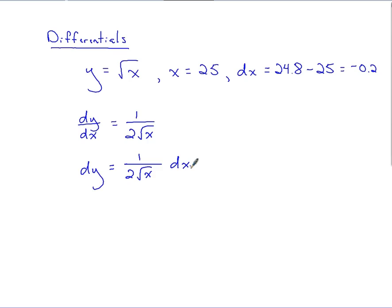Now, as we've done before, evaluate dy. Evaluate dy for the given values of x and dx. So the values of x and dx we came up with. We want over 2 times, x is 25, so the square root of 25. dx we found to be negative 0.2. Let's calculate that out. One-tenth of negative 0.2. Should get negative 0.02.